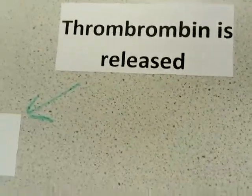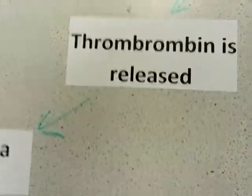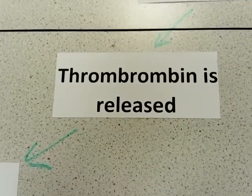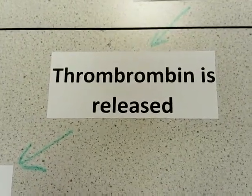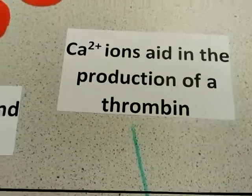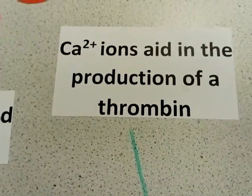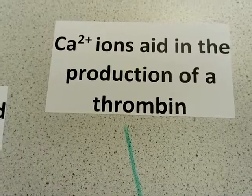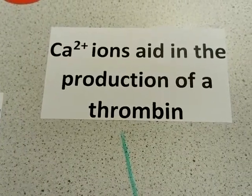The platelets also allow the protein thrombin to be released. At the same time, calcium ions in the bloodstream aid in the production of the thrombin that we're about to make.